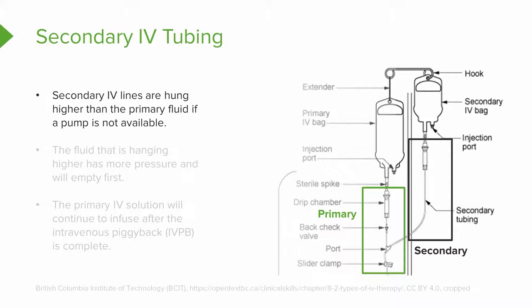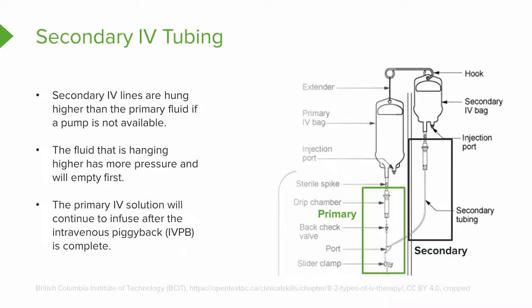The secondary IV lines are hung higher than the primary fluid. Take a look at that picture — we've placed an extender there, just a little plastic hanger. You hook it through the top of the bag and put it on the IV pole, which allows the primary tubing to be lower than the secondary tubing. This is really important, because when it's time to hang the secondary IV bag, it will drain out first. Then the primary fluid will continue to drain, because the fluid hanging higher has more pressure and will empty first. Then the primary IV solution will continue to infuse after the piggyback is done.